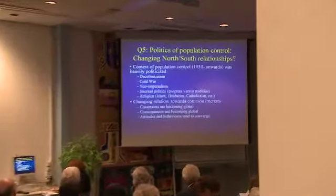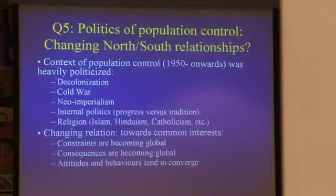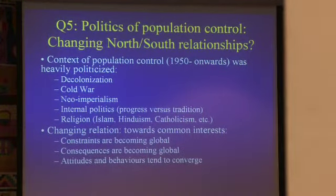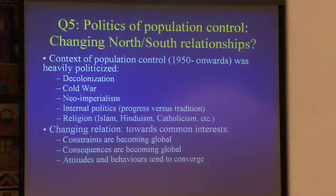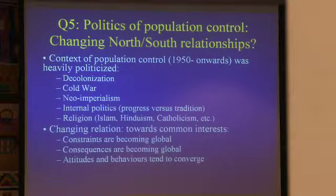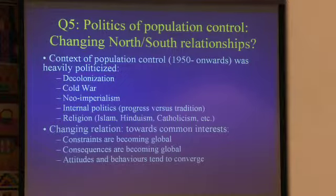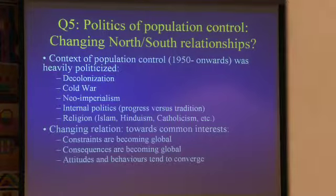The next question is the politics of population control. There have been major changes in the relationship between developed and developing countries. In the 1950s, when the population debate started, it was centered around the will of the North — namely the USA and its allies — to control the population of the South, mainly Latin America, Asia, and Africa. This happened, unfortunately, in the context of imperialism, decolonization, communism, and the Cold War, and was therefore heavily politicized. This is most unfortunate, since there are mostly common interests now and no longer major conflicting interests. Attitudes and behavior towards low fertility have converged in recent years. The world has become a global village with common economic and ecological constraints.